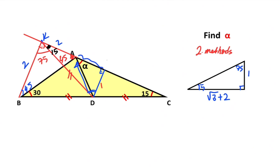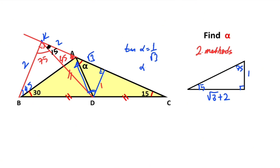So √3 is left here. Then if you focus on this triangle, notice that the ratio of the sides equals √3. It means tan(alpha) equals 1 over √3, so that means alpha is going to be 30 degrees.